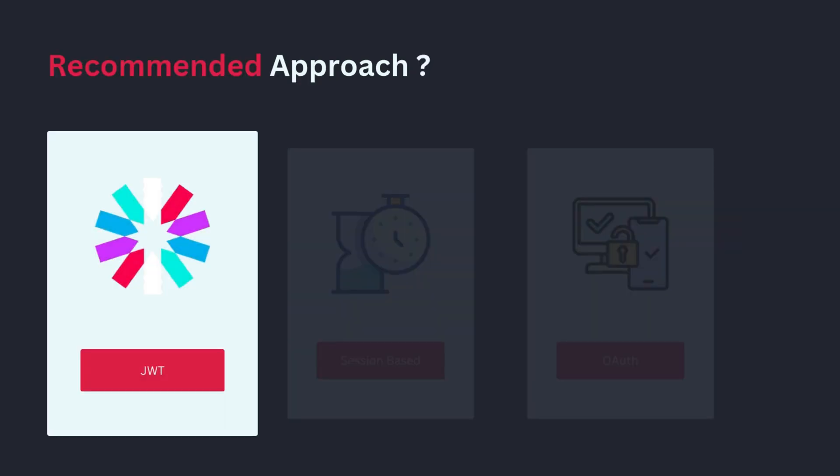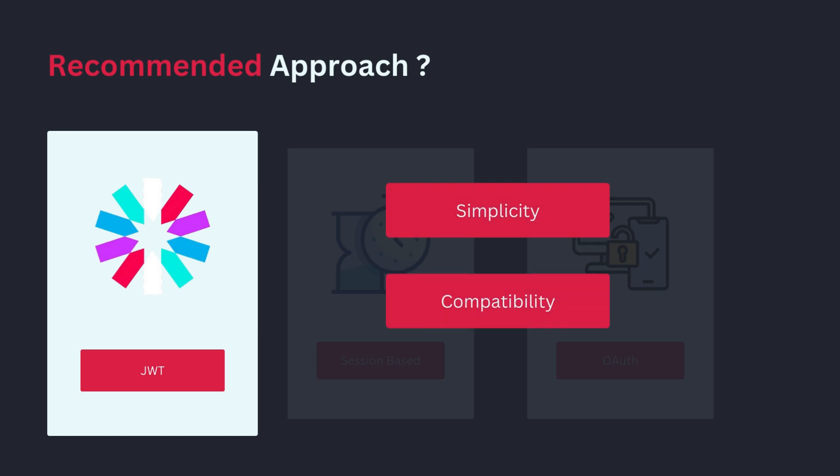So which one should you use? Use JWT for modern apps that prioritize scalability and statelessness. Use sessions for apps where strict token revocation is needed or where you prefer server-side control. Use OAuth for apps where third-party login makes sense, like social media integrations. For modern apps, JWT is the most recommended option because of its simplicity, speed, and ability to work across devices and platforms — and that's what we'll be focusing on today.